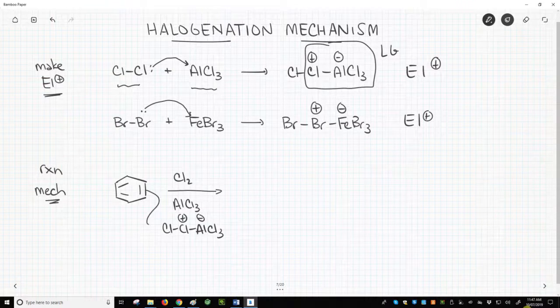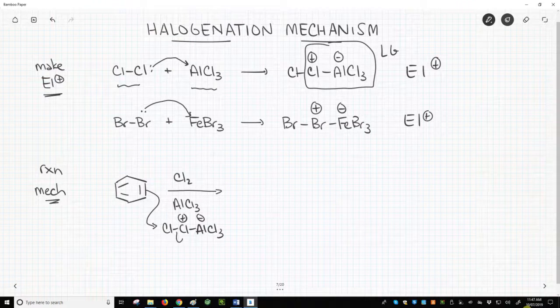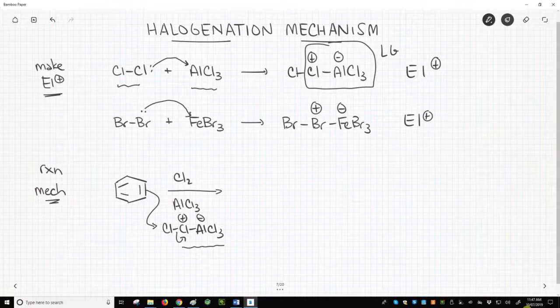A pi-bond from the benzene ring attacks the end chlorine. The Cl-Cl bond breaks, and the entire right-hand side accepts the electron density and leaves as an anion.